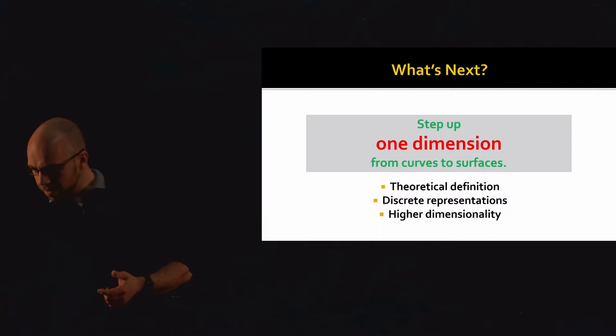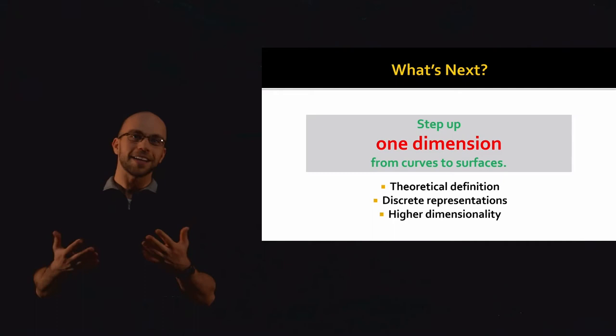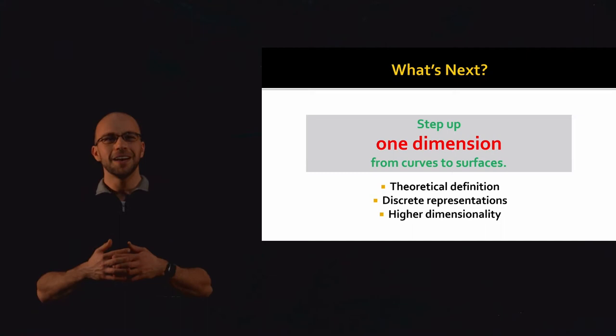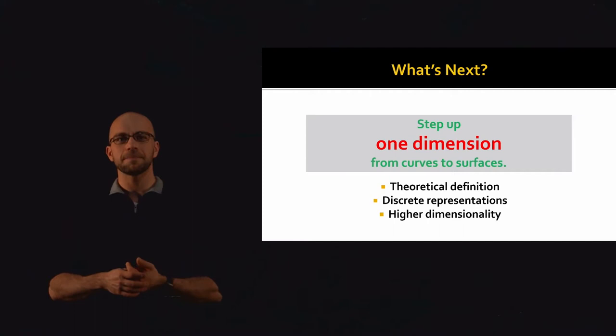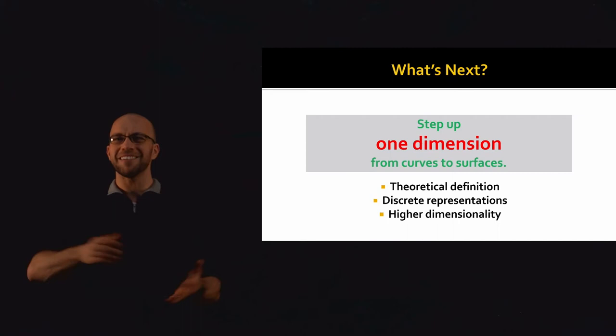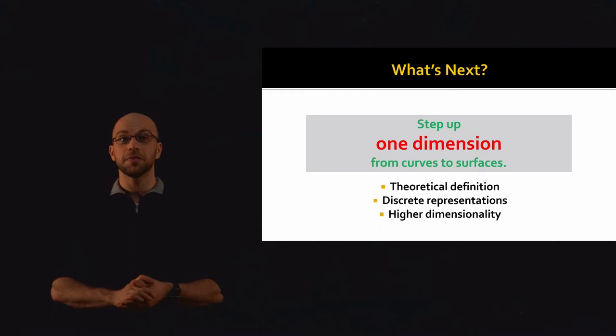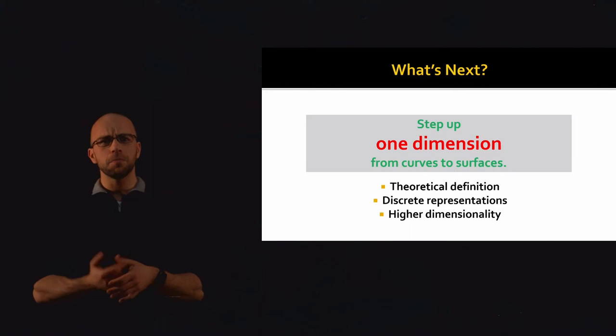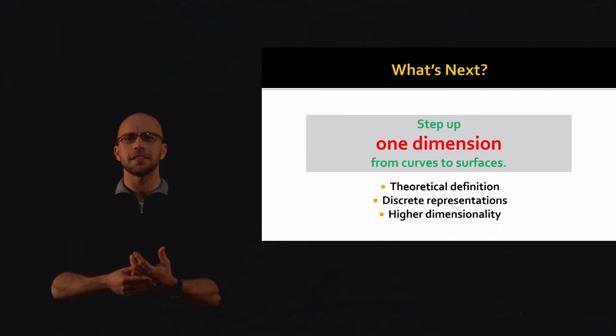After that, we're going to dive right into my favorite topic in 2D geometry, which is defining and working with curvature. So basically what's next in this course is to step up one dimension from curves to surfaces. We're going to start by defining surfaces, and then in the next couple of lectures, develop theory of curvature, distance, and so on, just the same as we have curvature and arc length for curves. Specifically today, we're going to talk about what it means to be a surface theoretically, discrete representations of surface geometry, and we'll also briefly mention some higher dimensional constructions.